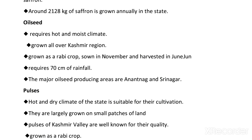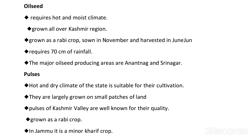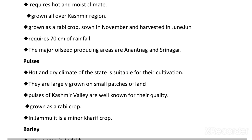Oil seeds require a hot and moist climate and are grown all over the Kashmir region as a rabi crop. They are sown in November and harvested in June, requiring 70 centimeters of rainfall. Major oil seed-producing areas are Anantnag and Srinagar.